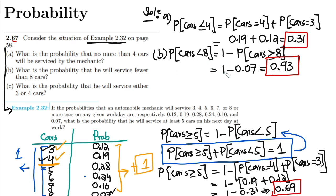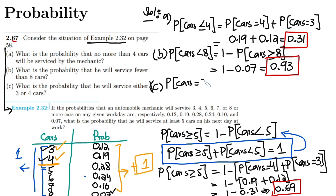That is the solution of part B. Similarly, for part C: what is the probability that he will service either 3 or 4 cars? I have to find the probability that the number of cars equals 3 or 4.